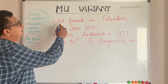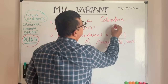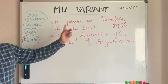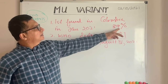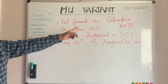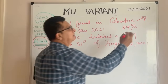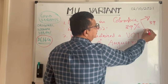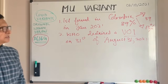Despite that similar timeline, how far has mu spread? Even in Colombia, its place of origin, it is prevalent at only 39 percent at the moment. The remaining 61 percent of Colombian COVID variants is Delta. Worldwide, mu has spread to 39 countries, but the neighbouring province of Ecuador has only 13 percent prevalence of the mu variant.